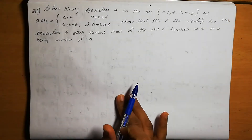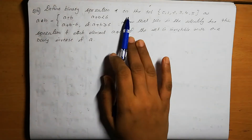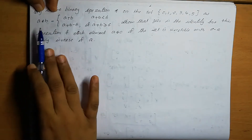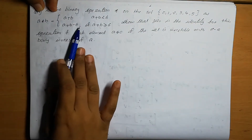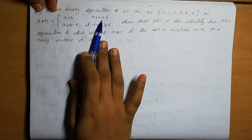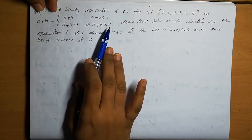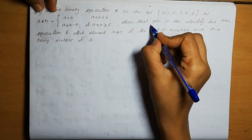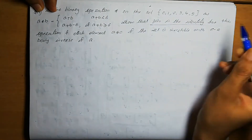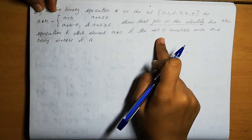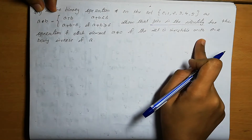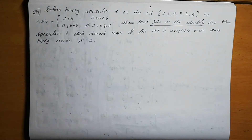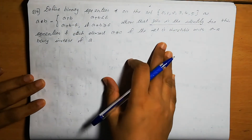Question number 14. Define a binary operation star on the set {0, 1, 2, 3, 4, 5} where A star B equals A plus B if A plus B is less than 6, and A plus B minus 6 if A plus B is greater than or equal to 6. We need to show that 0 is the identity and each element A not equal to 0 is invertible with 6 minus A being the inverse. We can do this with a table.